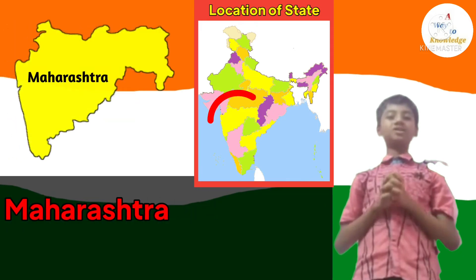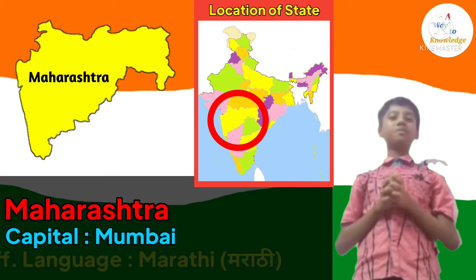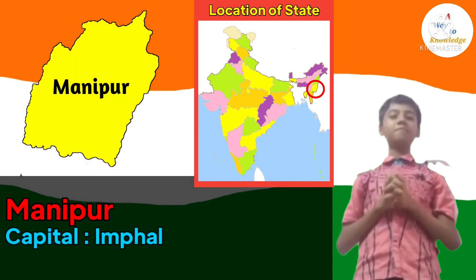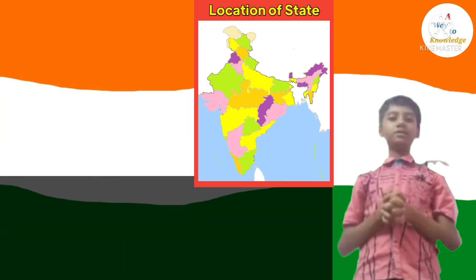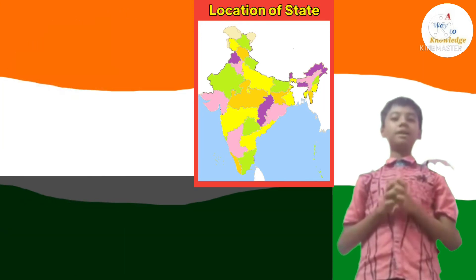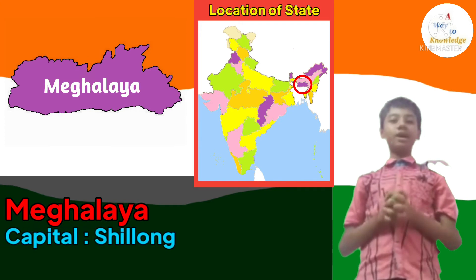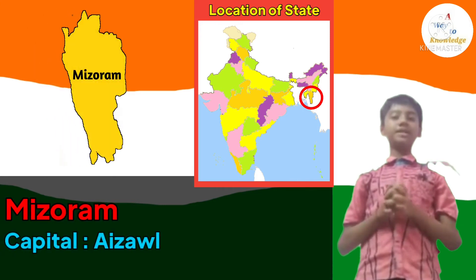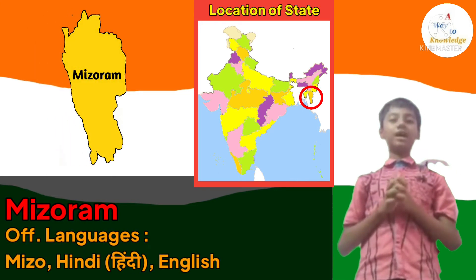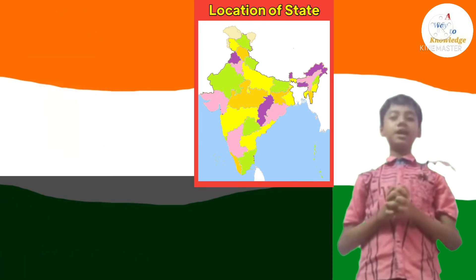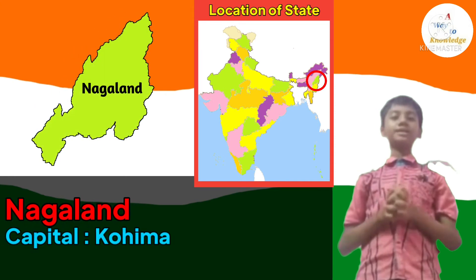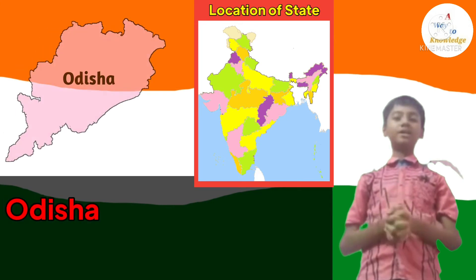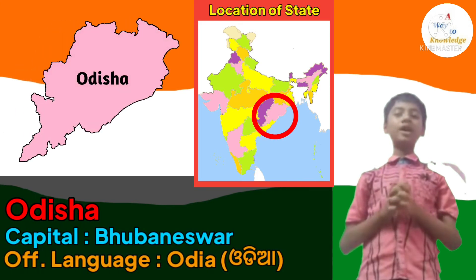State number 14: Maharashtra. Its capital is Mumbai and its official language is Marathi. State number 15: Manipur. Its capital is Imphal and its official language is Meitei. State number 16: Meghalaya. Its capital is Shillong and its official language is English. State number 17: Mizoram. Its capital is Aizawl and its official languages are Mizo, Hindi, and English. State number 18: Nagaland. Its capital is Kohima and its official language is English. State number 19: Odisha. Its capital is Bhubaneswar and Odia is its official language.